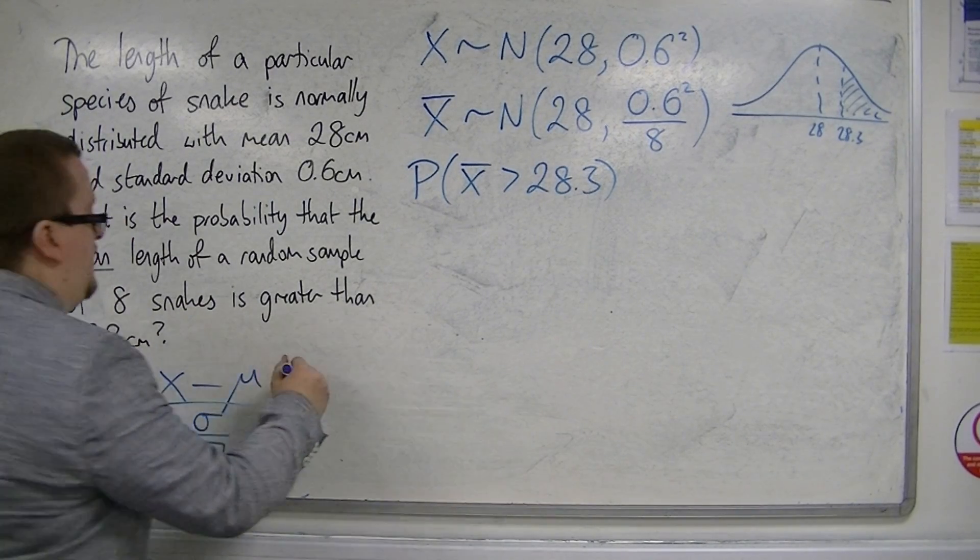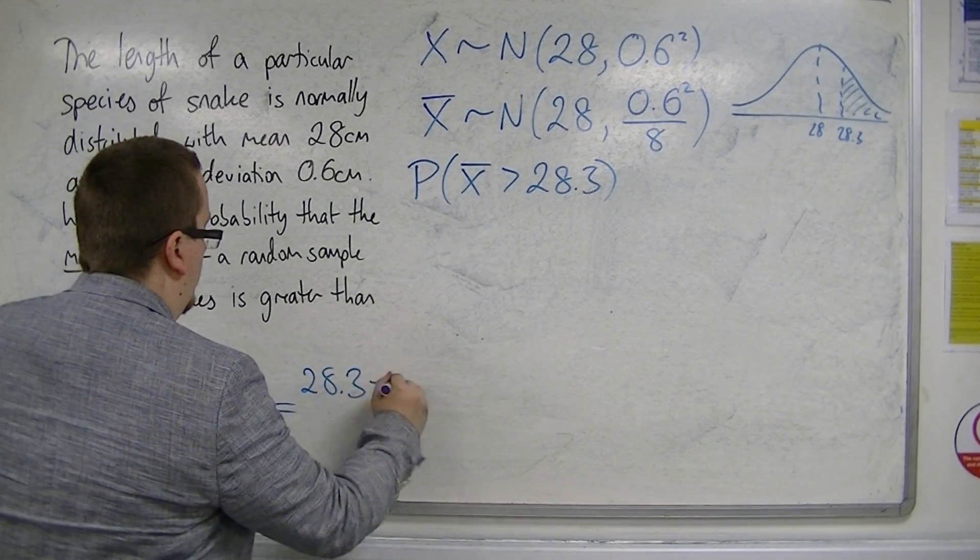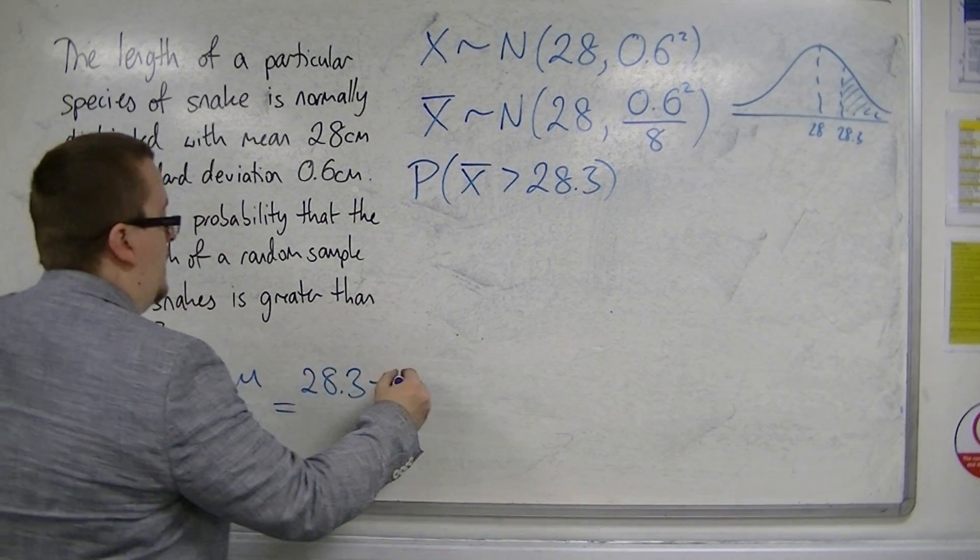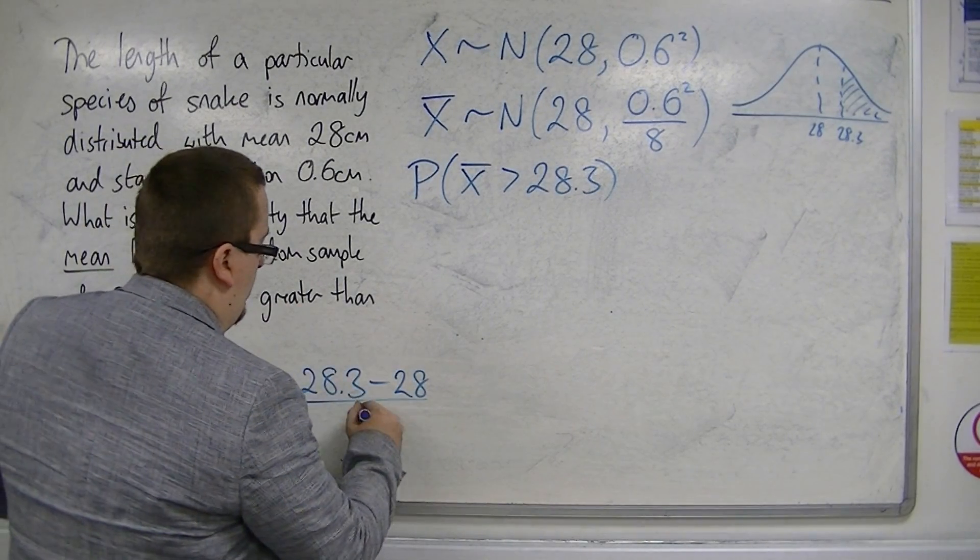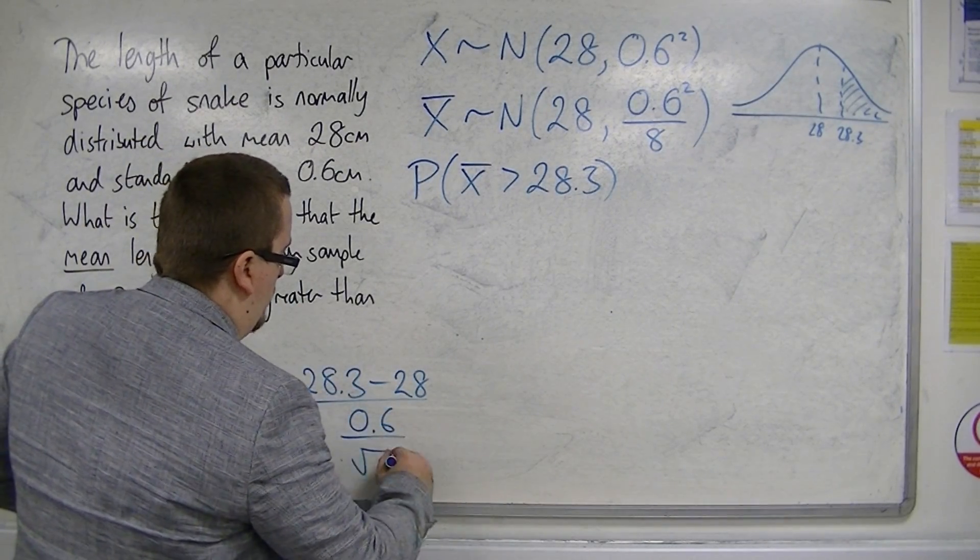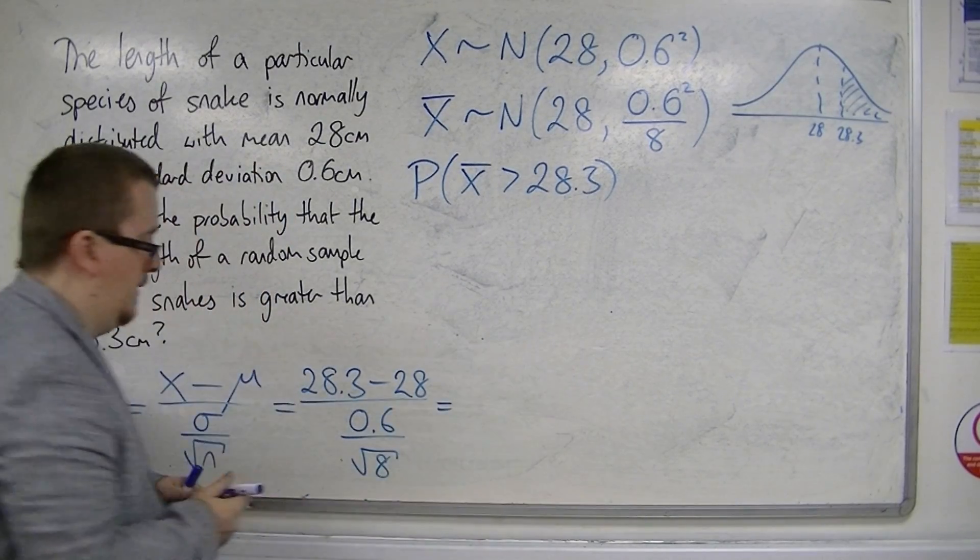So x is 28.3, the mean is 28, sigma is 0.6, and root n is root 8. We've thrown that into our calculator.